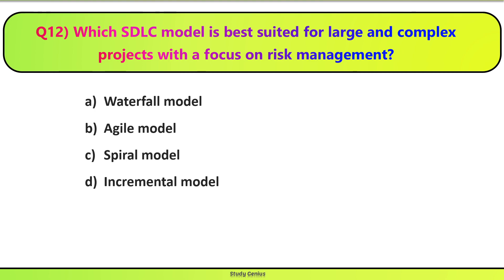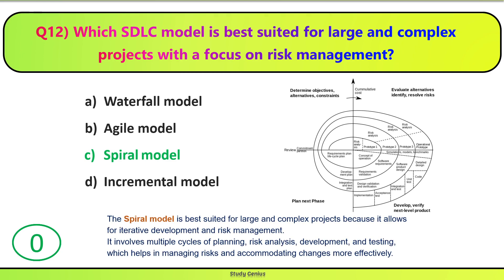Question 12. Which SDLC model is best suited for large and complex projects with a focus on risk management? Kaunsa SDLC model best hai for large and complex projects, jahan main focus risk management par hota hai — Waterfall model, Agile model, Spiral model, ya Incremental model? Correct answer is C. Spiral model is best suited for large and complex projects because it allows for iterative development and risk management. It involves multiple cycles of planning, risk analysis, development, and testing, which helps in managing risks and accommodating changes more effectively.